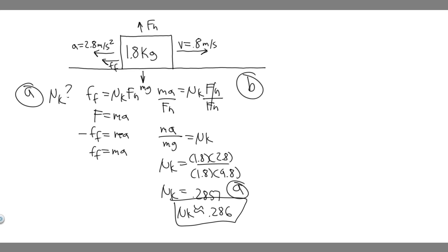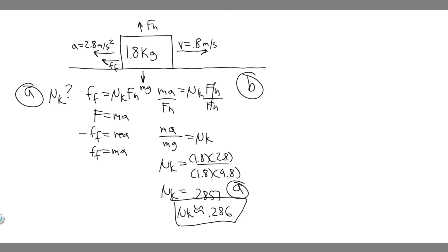Part B is asking a conceptual question — something you have to think through logically rather than calculate. When the block slows to 0.4 meters per second, is the acceleration greater than, less than, or equal to 2.8 meters per second squared? The only horizontal force is friction, and that friction force is not changing throughout the problem. Since the force of friction equals mass times acceleration and neither changes, the acceleration remains constant. So the acceleration is still equal to 2.8 meters per second squared.